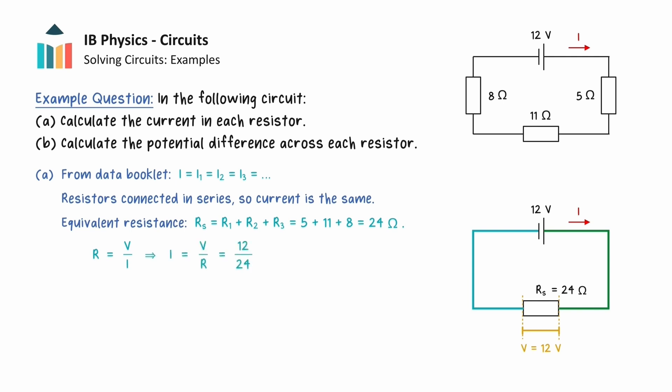Therefore, the current through the equivalent resistor is 0.5 amps, and this is the current through each of the three resistors of the original circuit.